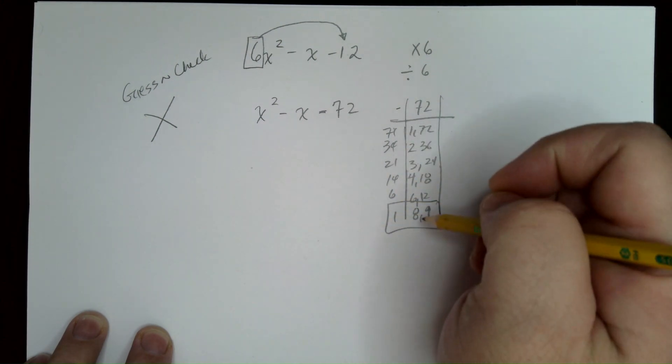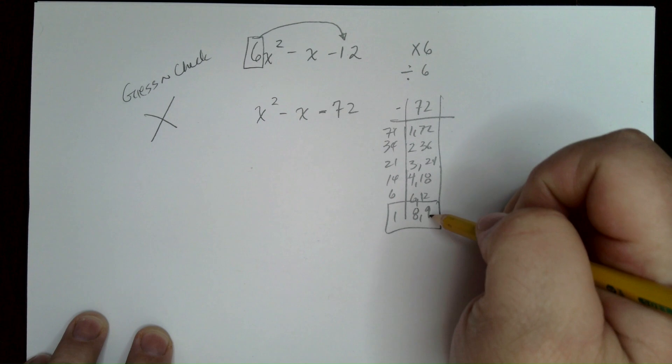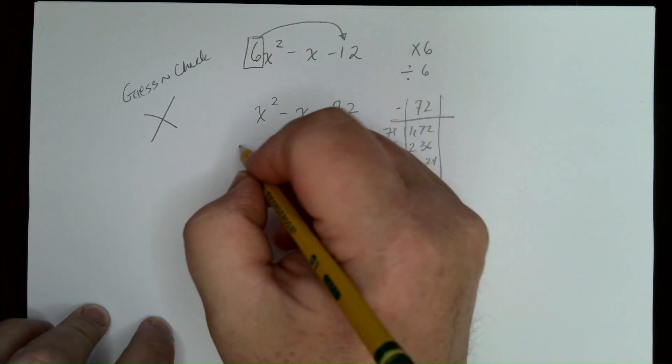8 and 9. So, the thing is, it's a negative one. So the 9 is negative and the 8 is positive. So let's go ahead and separate that.